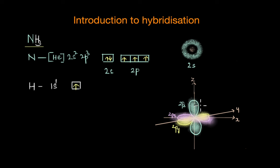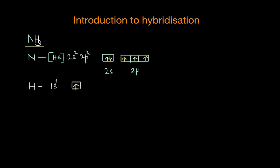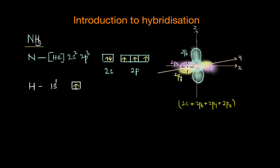These orbitals also differ in their energy. The 2s orbitals are closer to the nucleus and therefore are lower in energy than the 2p orbitals. So this is what the 2s and 2p orbitals of a nitrogen atom look like. Now based on valence bond theory, where bonds are formed by the overlapping of atomic orbitals, how do you think the bonds would form in the case of ammonia?